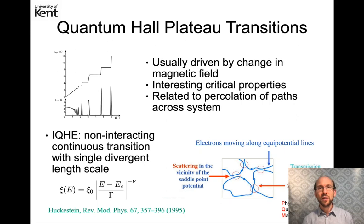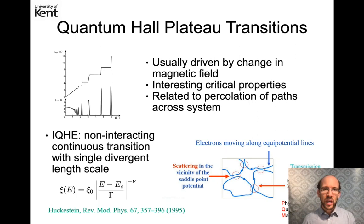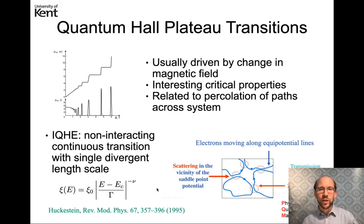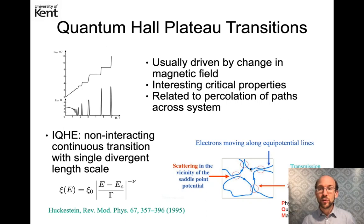These quantum Hall plateau transitions have been very well studied. They're usually driven by a change in the magnetic field and have interesting critical properties related to the percolation of paths across the system. In the case of integer quantum Hall plateaus, this can be explained in terms of a non-interacting continuous transition where right at the transition a single length scale diverges with some critical exponent — the correlation length exponent. One way to visualize this is that there's a disorder landscape where electrons move along equipotential lines, and where several such puddles meet, electrons can tunnel across the system until finally at the transition point we get exactly one percolating path across the whole system.